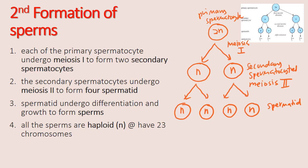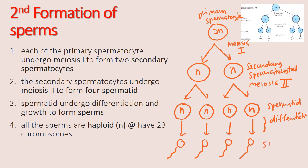What will happen to the spermatids is that all the spermatid cells will undergo differentiation, and through this process they will form sperm, also known as spermatozoa. All the sperm are haploid cells, symbolized by N, and have 23 chromosomes.